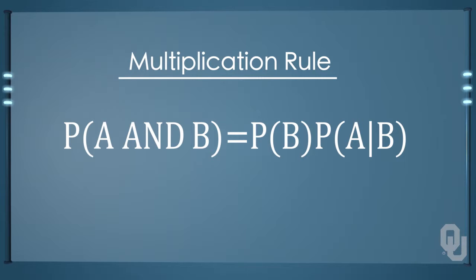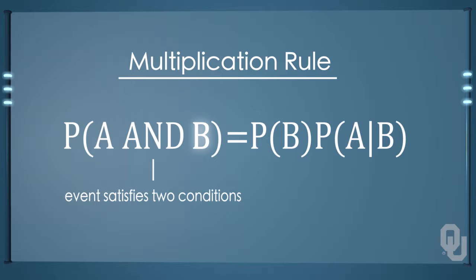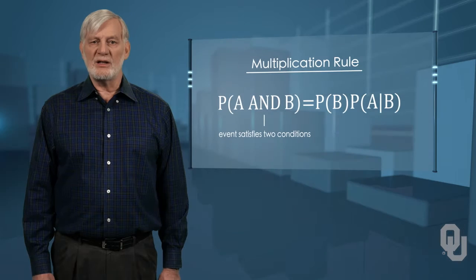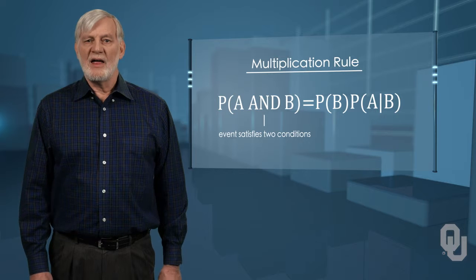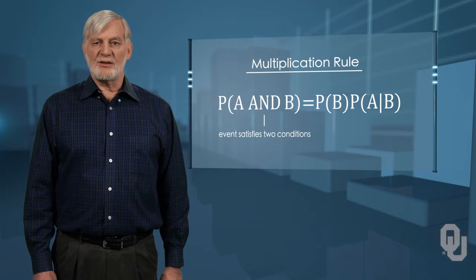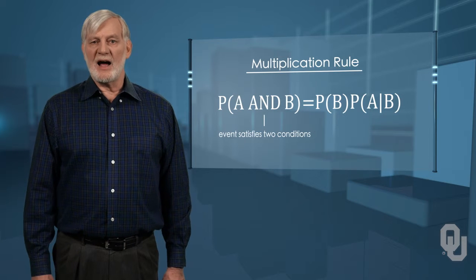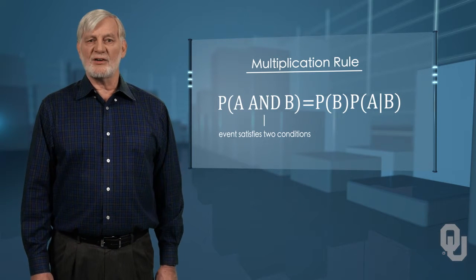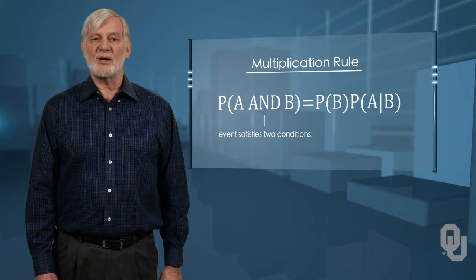One easy way to remember the multiplication rule is that the word AND means the event has to satisfy two conditions. For example, the person drawn from the class roster is to be a sophomore with a four-point GPA. Both conditions have to apply. It is harder to satisfy two conditions simultaneously than only one. And when we multiply fractions, the result is always smaller than either number. This reflects the increasing difficulty of satisfying two conditions simultaneously.